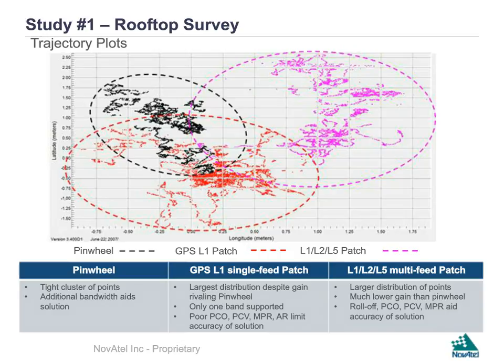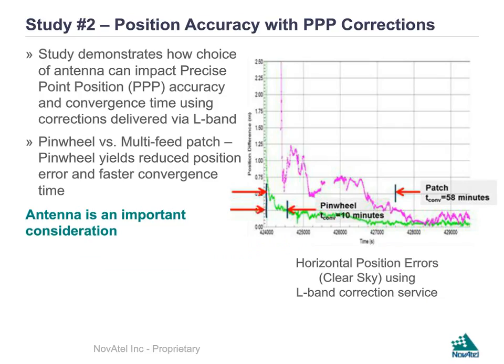In the second study, we look at position accuracy with PPP corrections applied via L-band, comparing horizontal position errors when using a pinwheel versus a patch. With the pinwheel, the time to convergence is 10 minutes, whereas for the patch, the time to convergence is nearly 58 minutes. This demonstrates that in a PPP application with L-band-delivered corrections, the choice of antenna does matter.